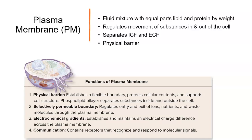Let's think about that gradient or difference on each side of the membrane. Electrochemical refers to chemicals that have electrical charges — like our ions, but other things as well. We're talking about chemicals and electrical charges that are different on each side of the membrane. That's going to be really important for the cell doing its job.